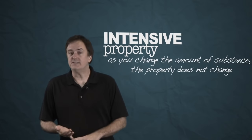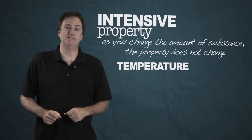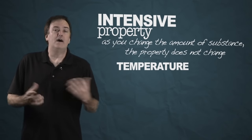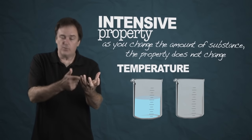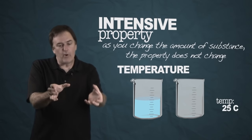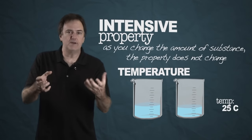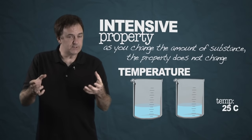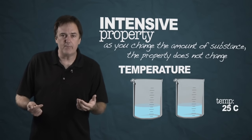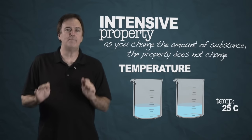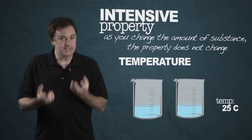A great example of an intensive property is temperature — it's one of our premier intensive variables. If you have a glass of water at 25 degrees C and you pour half the water into another glass and ask what the temperature is, the temperature is still 25 degrees. It's an intensive property; it absolutely does not matter how much you have.